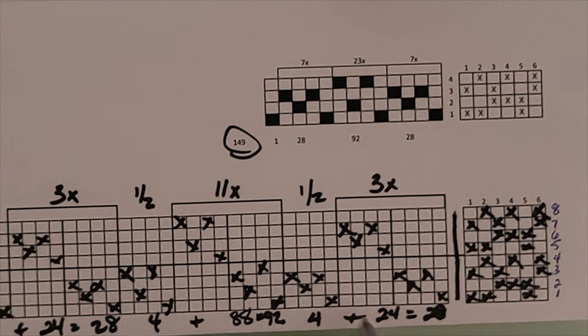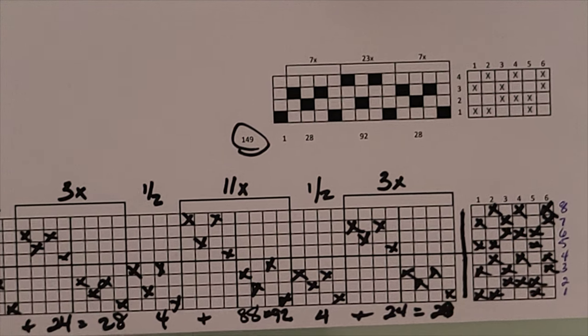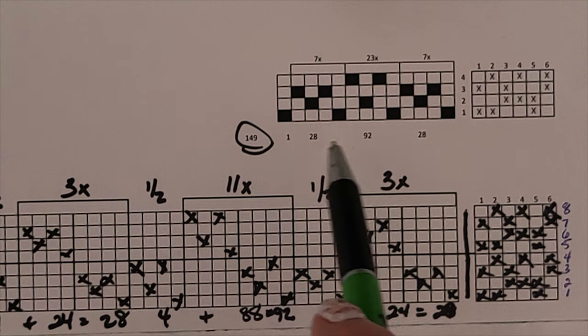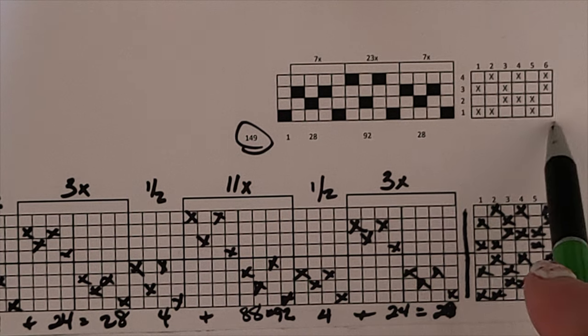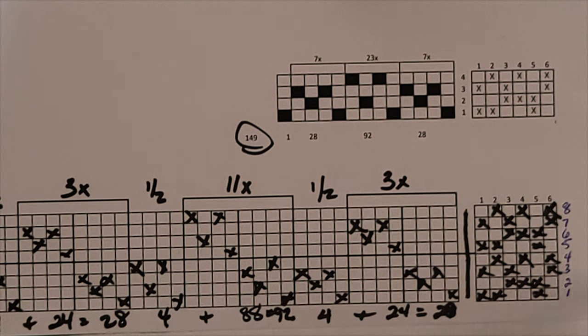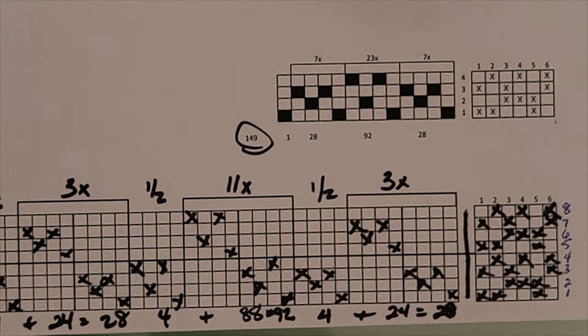So those are our shafts, our tie-up, and our threading. So we've just converted a four-shaft draft to an eight-shaft draft. That's it. That's easy.